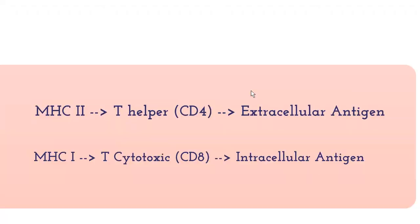In summary, T helper cells are used in extracellular antigenic responses and require antigen to be presented with MHC class II molecules. T cytotoxic cells are used in intracellular invasions and are activated by APCs presenting antigen using the MHC class I molecule.